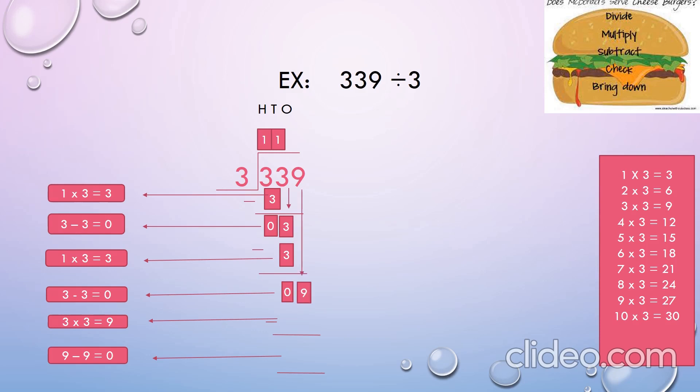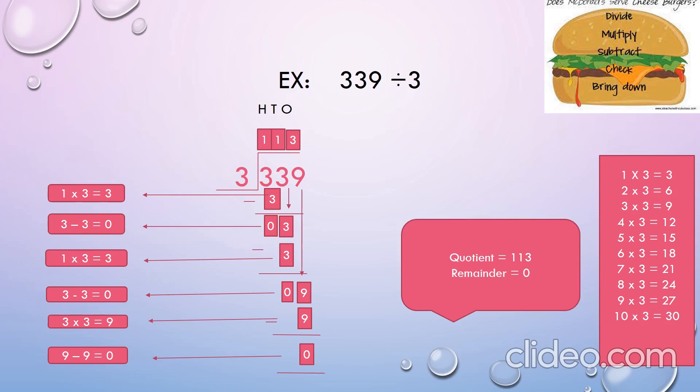Let's bring down the next digit from the ones place, that is 9. By using the tables of 3, we will get the product 9 by multiplying 3 with 3. So let us write 3 in the ones place of the quotient and 9 below 9. Subtract 9 from 9, which gives 0. Here the quotient is 113 and the remainder is 0.